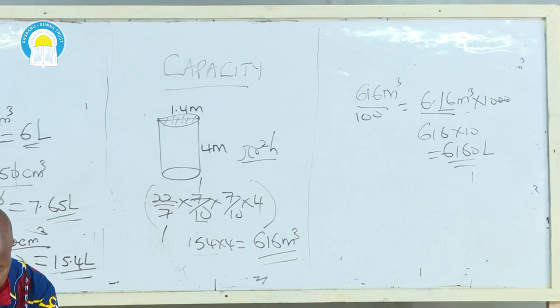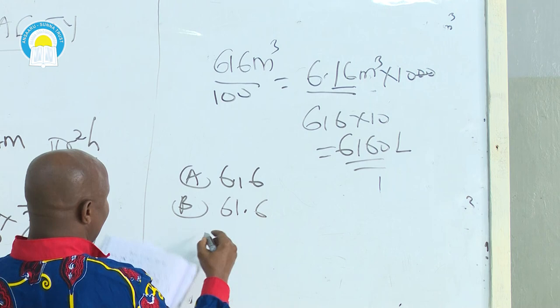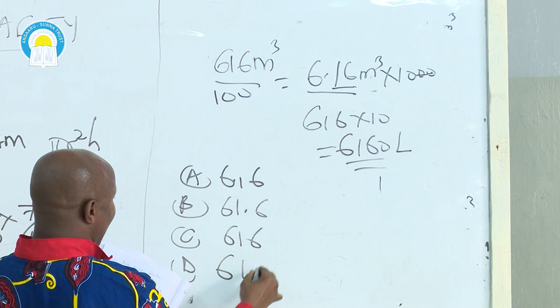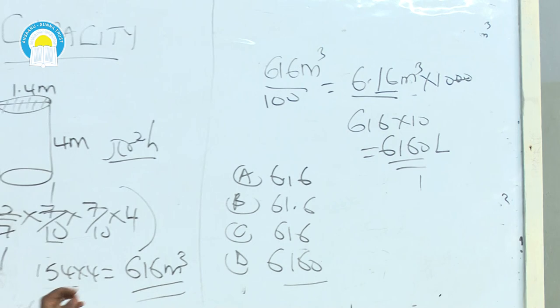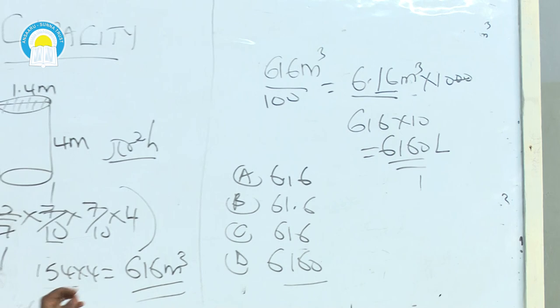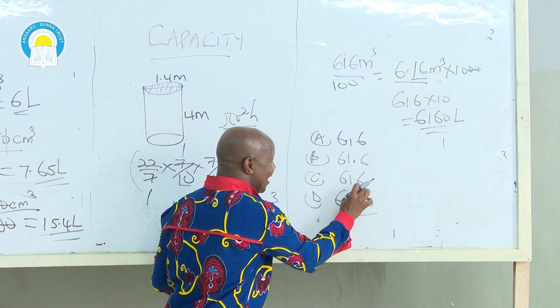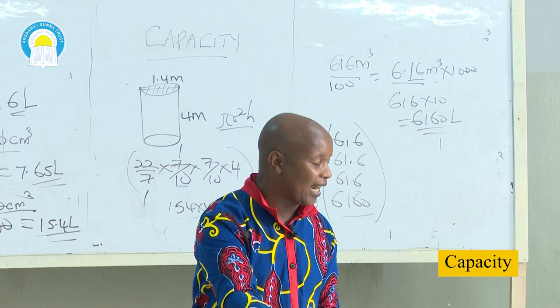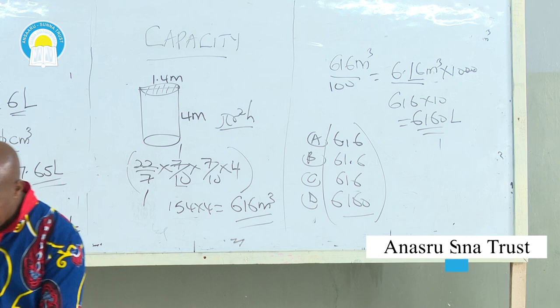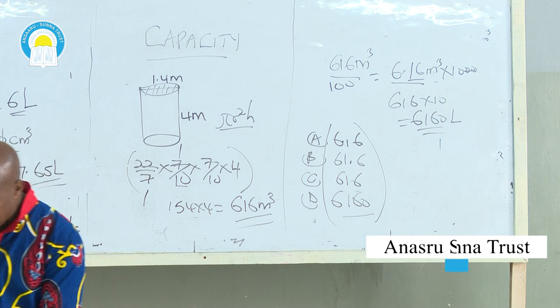I want you to be very keen. The choices given for that question were: A) 6.16, B) 61.6, C) 616, D) 6,160. The trick of the examiner is only interested in the conversion. All these are possible answers — they differ only by decimal places. A very slight mistake in conversion will land a candidate in trouble.